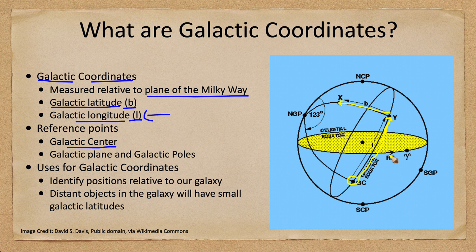The longitude would be measured along the galactic plane itself. The latitude would be measured above or below that. Those would give us our coordinates, and we can use all of those to determine the coordinates of the object in the sky.